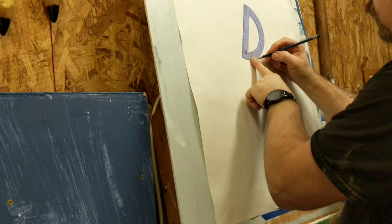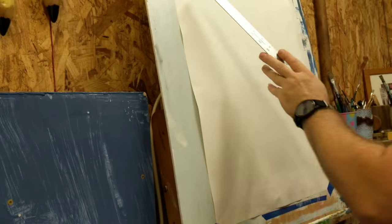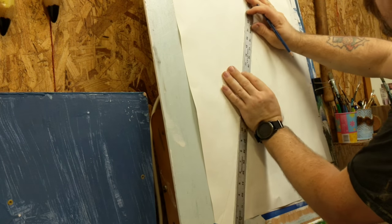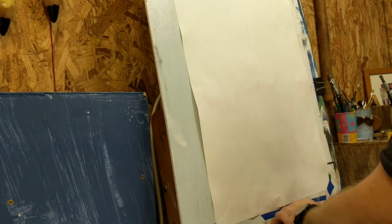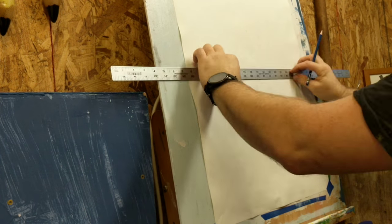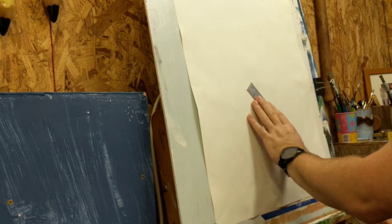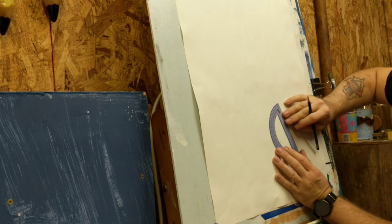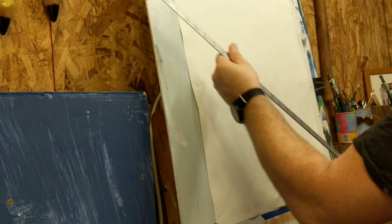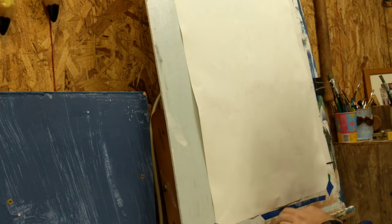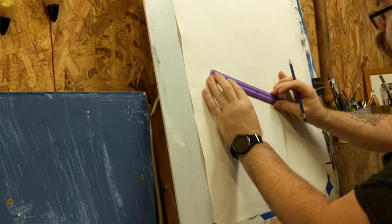I just started in the middle of the paper and working my way out. I measured everything and drew everything out as best that I could. And if you didn't know, the outside corners of a star are 36 degrees.